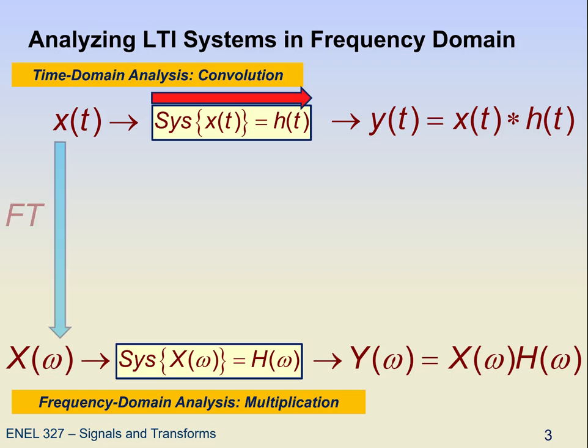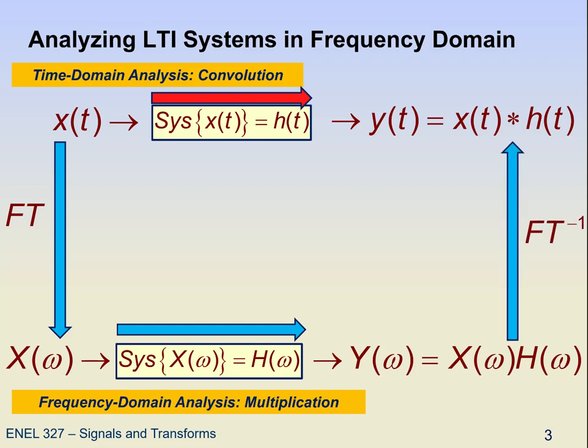Rather than working strictly in the time domain, we work around that by first converting the input to the frequency domain, then going through the system — which we also convert the impulse response to the frequency domain — and we get our result Y(ω), and then just do an inverse Fourier transform to find the output in the time domain.